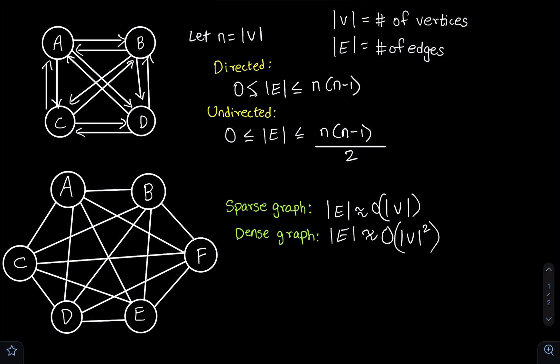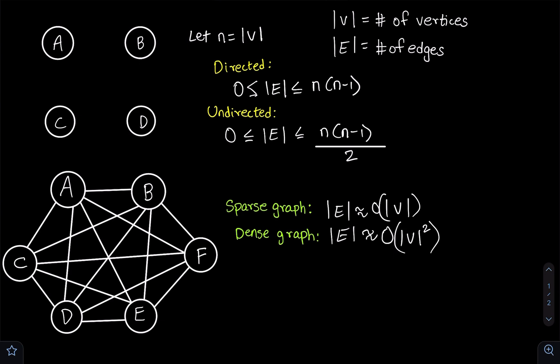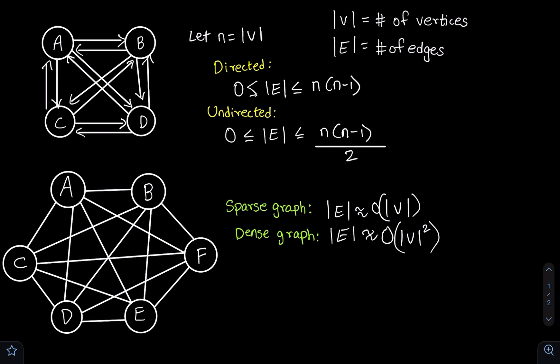For a given directed graph, the minimum possible number of edges is zero. So basically we could have a graph with only vertices and no edges at all, and this would still be considered a valid graph.